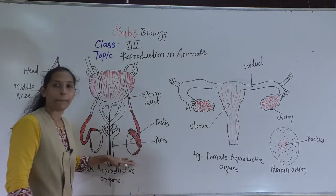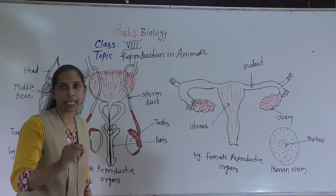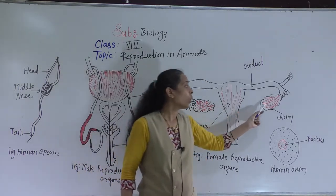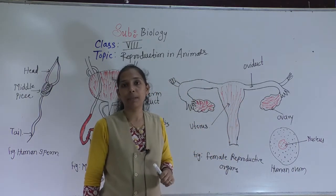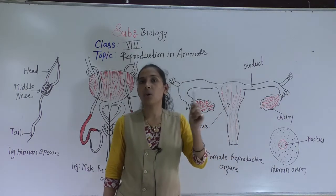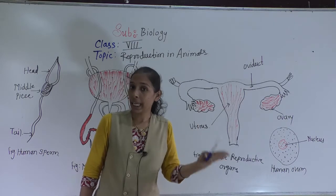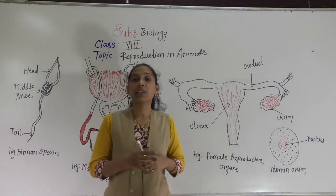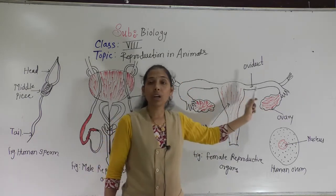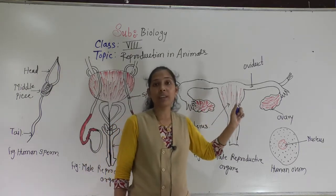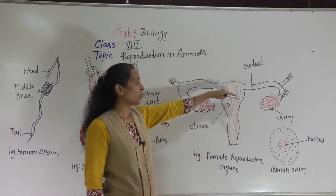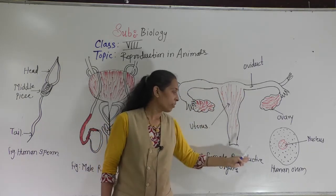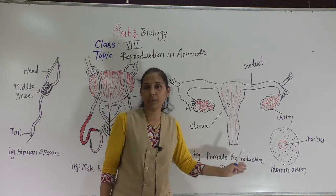Just as the testes produce the male gamete called sperms, in the female, gametes are produced inside the ovary. The female gamete is called the egg or ovum. A single mature egg is released from one of the ovaries every month. The uterus is the place where the new individual develops — the development of the new baby happens in the uterus.